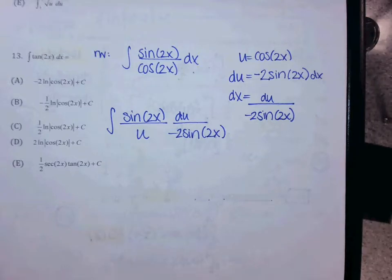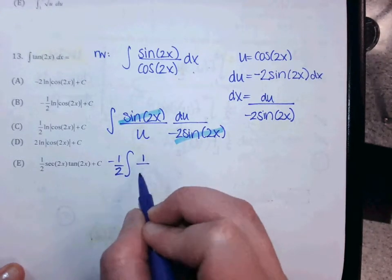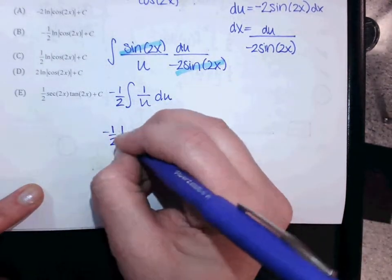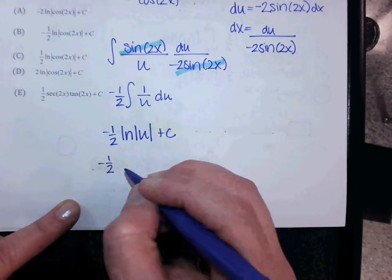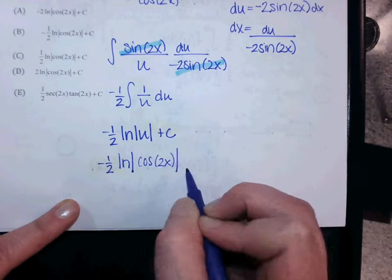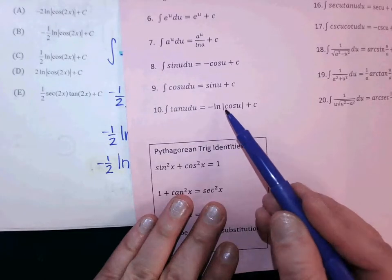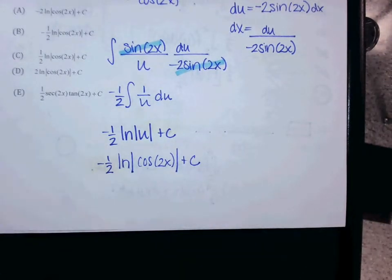What constant moves to the front? Negative one half. And what's left over? 1 over U. Remember, we have a rule for that — 1 over U integrates to ln. So it's negative one half ln|U|. Don't forget your absolute value bars. Now that I've had you get out your sheet, you can see that's rule 10 on the bottom of the first column: negative ln|cos U|. If you're not going to memorize it, you should be able to figure it out on the AP test. So what answer is that? E.